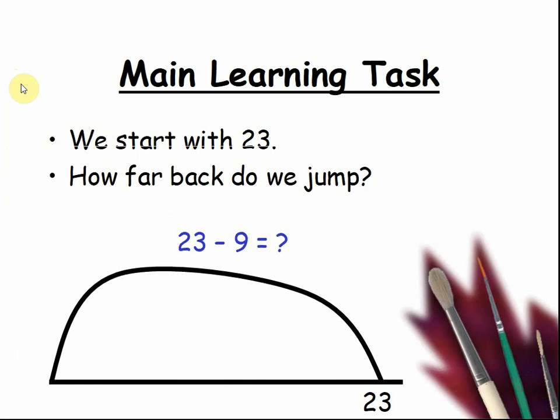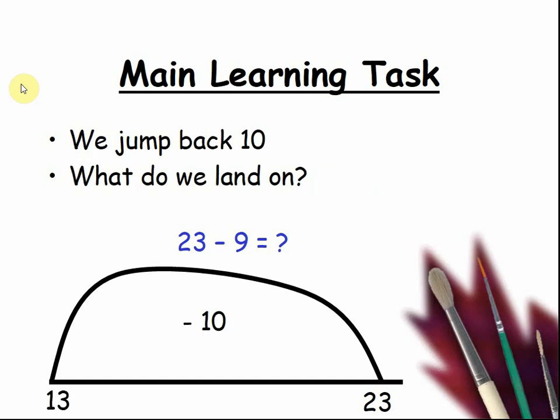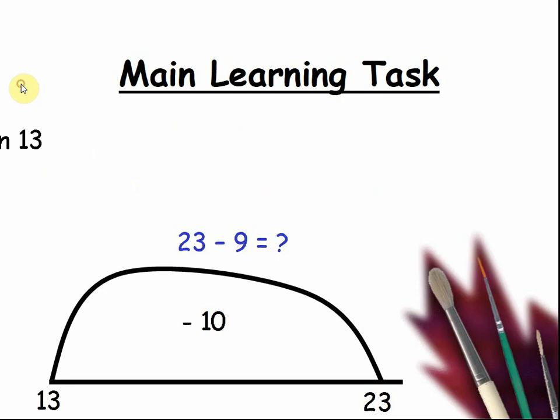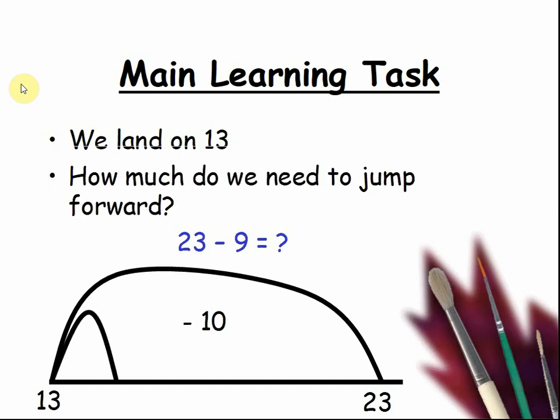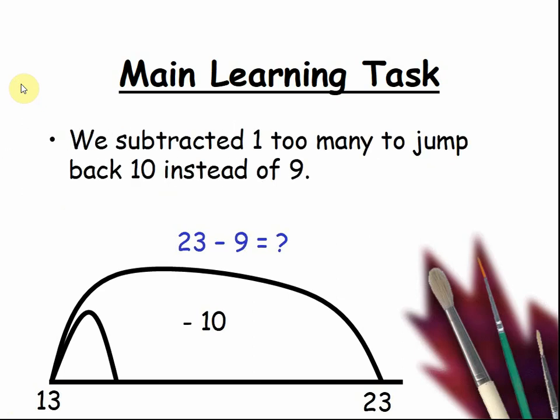How far back do we jump? This time it will surprise you. Because we don't jump back 9. We jump back 10. Because 10 is an easier number to take off than 9. So we jump back 10. We land on 13. How much do we need to jump forward to make it a 9 and not a 10? We subtracted 1 too many to jump back 10 instead of 9. So we need to add a 1.